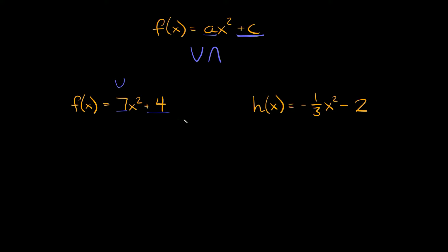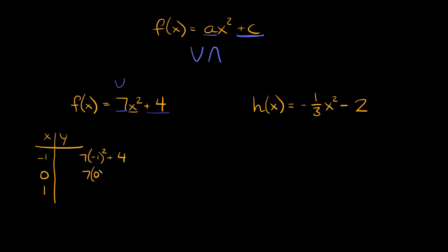In order to graph it, all we need to do is graph a few points. We can make a little xy table. Some easy numbers to use are negative 1, 0, and 1. So we're going to plug those in for x: 7 times negative 1 squared plus 4; 7 times 0 squared plus 4; and 7 times positive 1 squared plus 4.